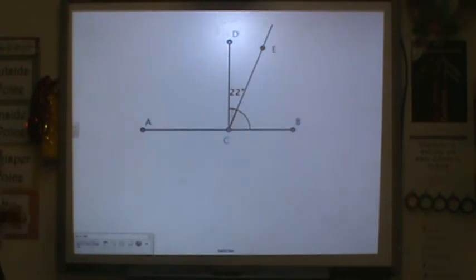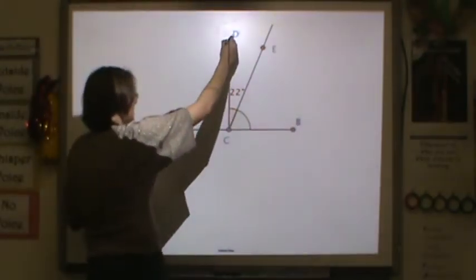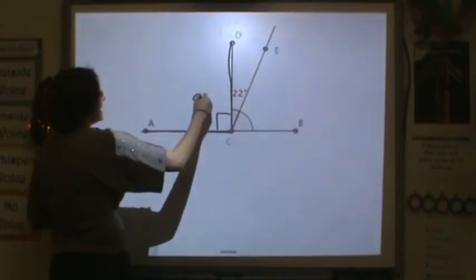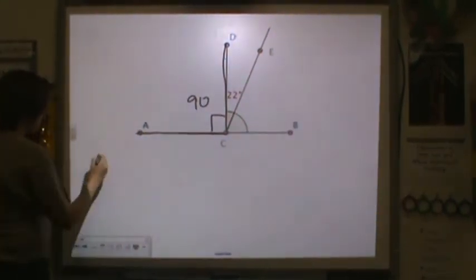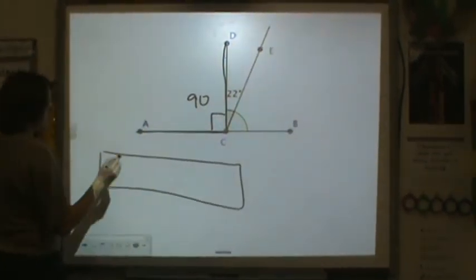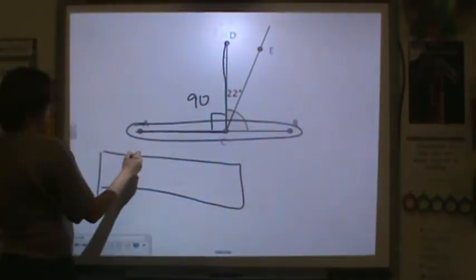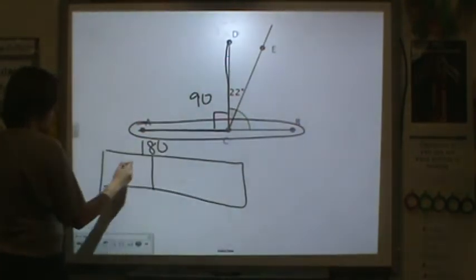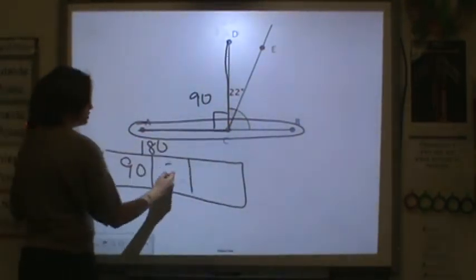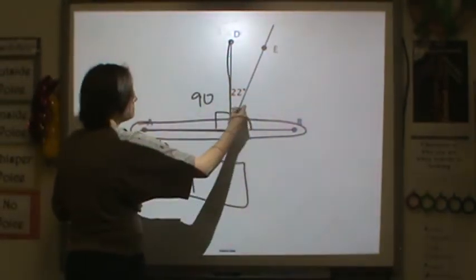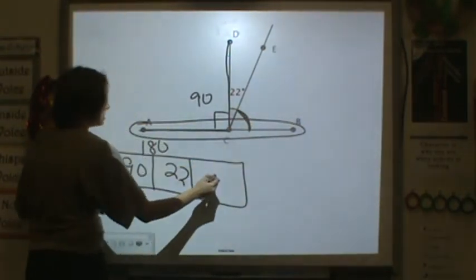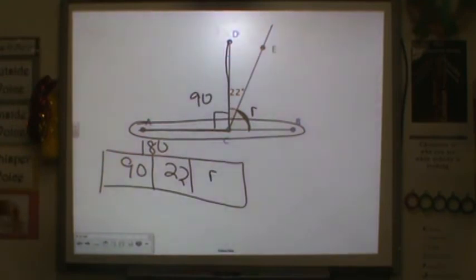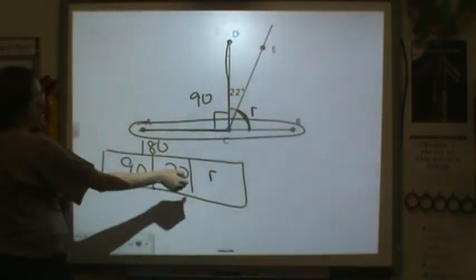Here, this one's a little bit tricky. We know that from d to c to a, that's 90 degrees. So we've got a supplementary angle. Our supplementary angle is AB. AB is equal to 180. And there are three parts here. We've got 90, we've got 22, and we've got this missing part that's in the green. We'll just call that part R. So we know that these are parts to our whole.